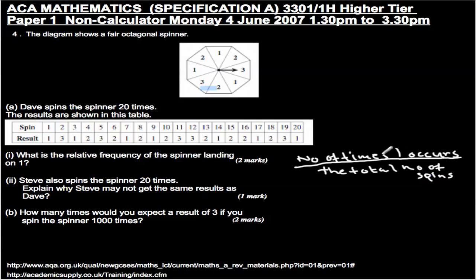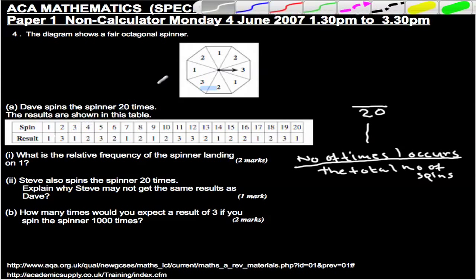Okay, so I'll just take it up here because we've got some space. The total number of spins is 20, so that goes on the bottom. Now, what goes on the top is the number of times 1 occurs, so we can count them. Let me just change colour of the pen. There's 1 there.